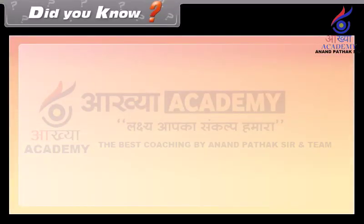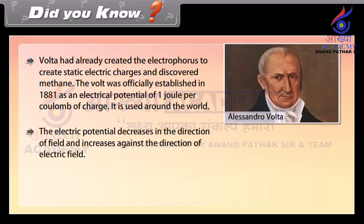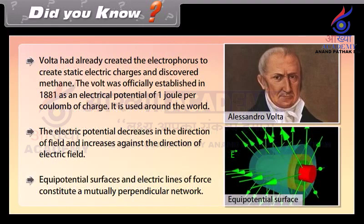Did you know? Volta had already created the electrophorus to generate static electric charges and discovered methane. The volt was officially established in 1881 as an electrical potential of 1 joule per coulomb of charge, and it is used around the world. The electric potential decreases in the direction of the field and increases against the direction of the electric field. Equipotential surfaces and electric lines of force constitute a mutually perpendicular network.